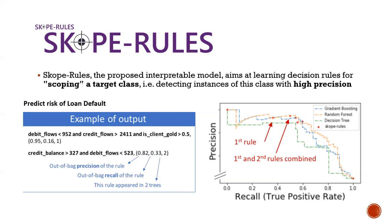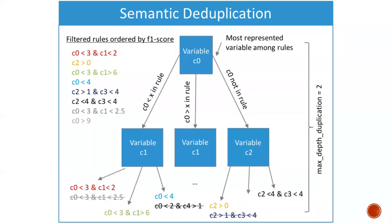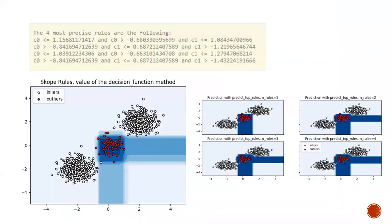If you have a decision tree that is so deep that it's hard to figure out all the rules, or too long to reach a decision, maybe try a rule list-based model to see whether it can give you more abbreviated, direct, and straightforward rules to reach that decision point.